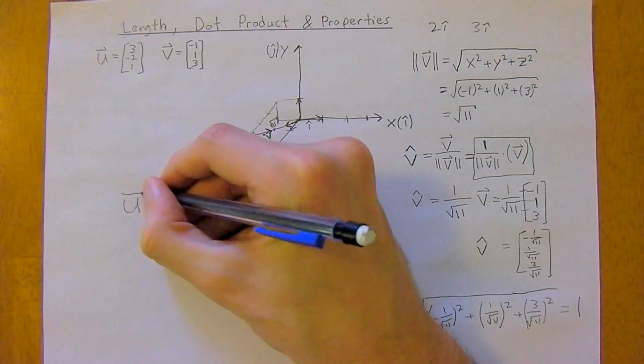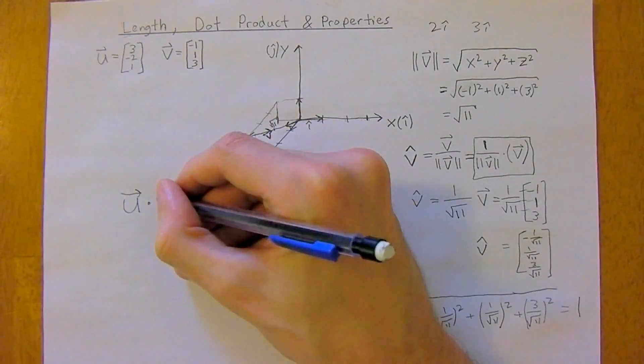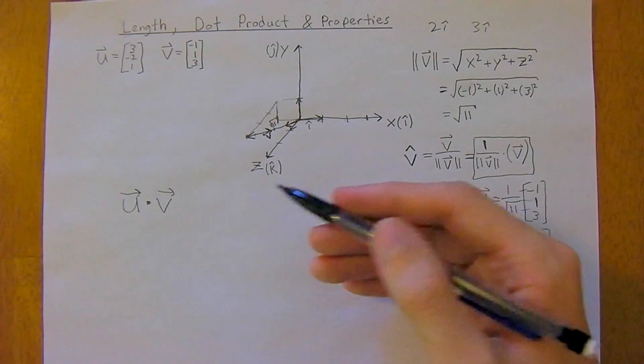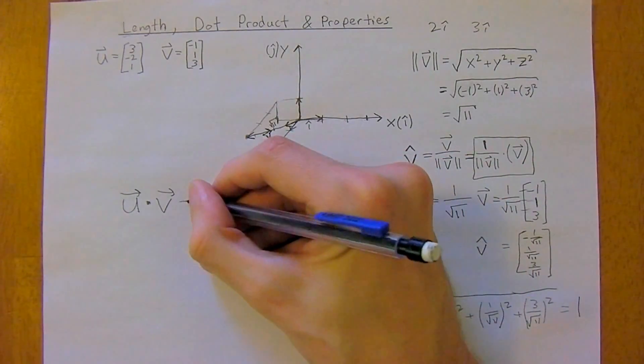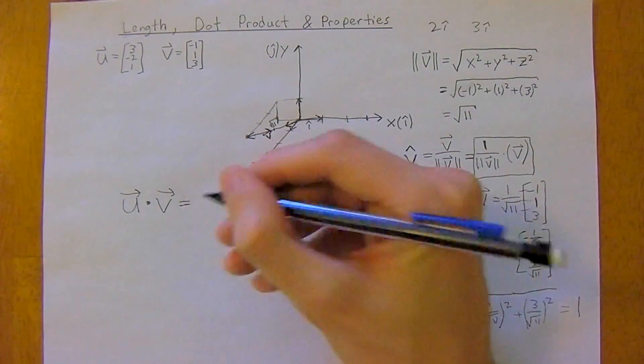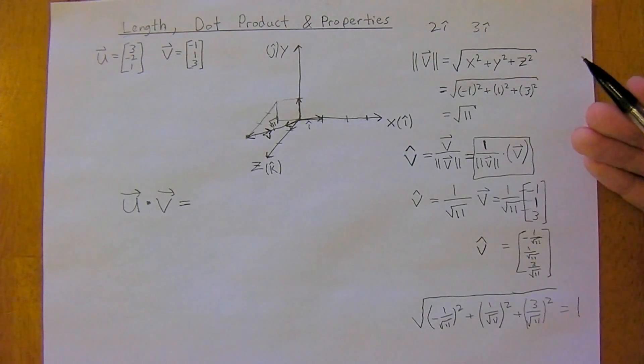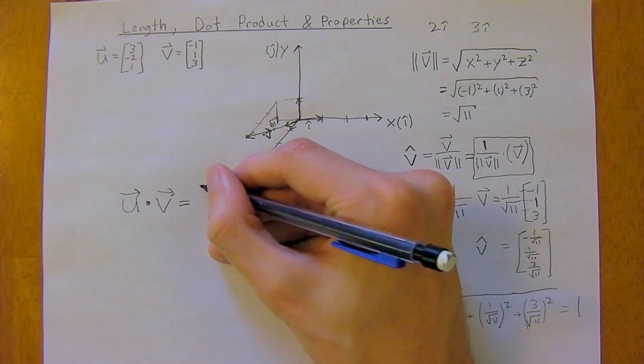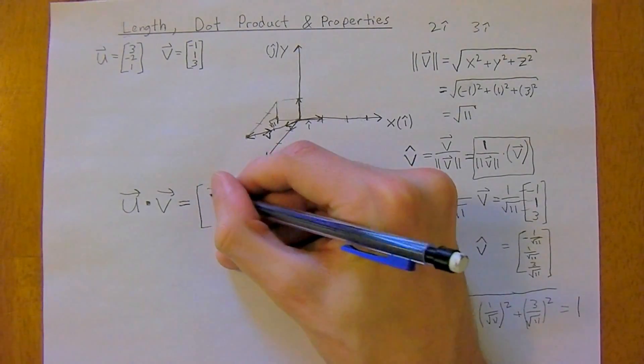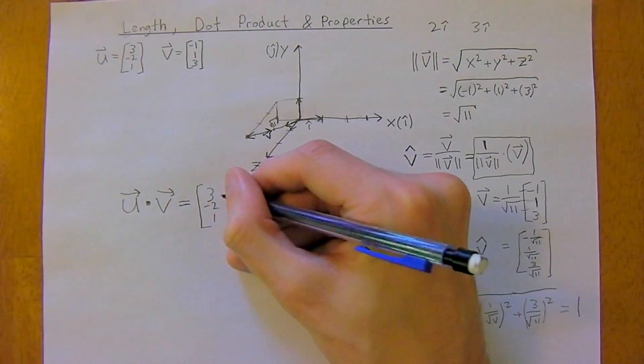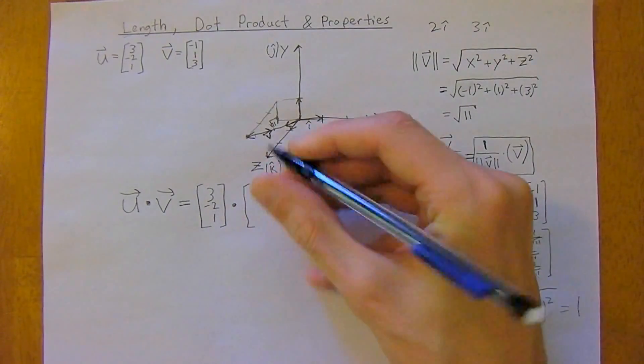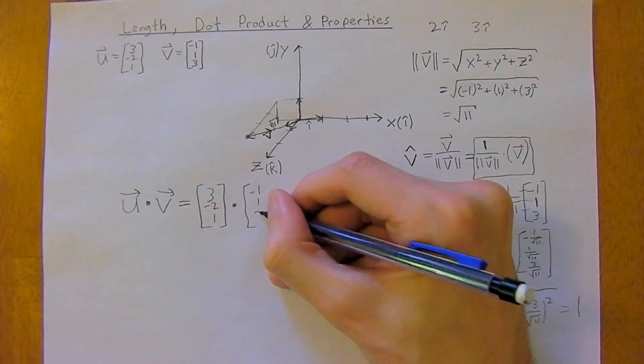So dot product u dot v, just denoted by this little dot. And it's also called the scalar product because the result of a dot product is just a scalar, not a vector. A cross product will give you a vector result, but dot product will just give you a scalar result. So in this case, we have [3, -2, 1] dot [-1, 1, 3].